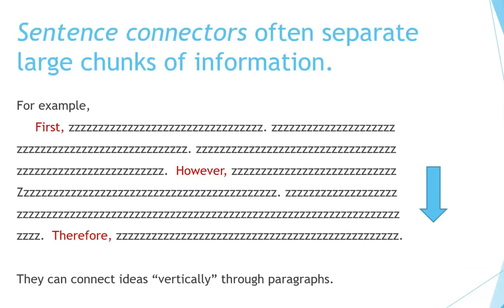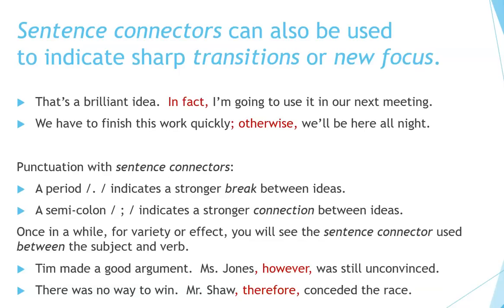Sentence connectors often separate large chunks of information — words like 'first,' 'however,' and 'therefore' can connect ideas vertically through paragraphs. They can also indicate sharp transitions or new focus. For example: 'That's a brilliant idea. In fact, I'm going to use it in our next meeting.' 'We have to finish this work quickly. Otherwise, we'll be here all night.'